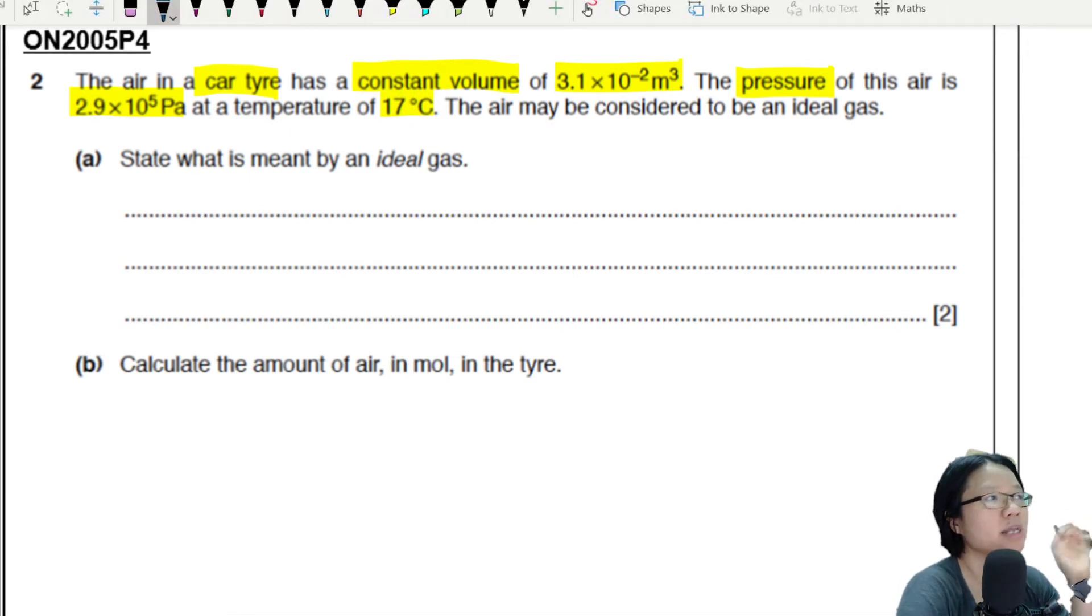Oh, lots of information. Let's label them: volume, pressure - so pressure here is P - and temperature. The air may be considered to be an ideal gas. Part A: State what is meant by an ideal gas.